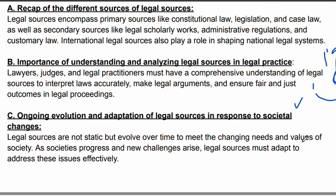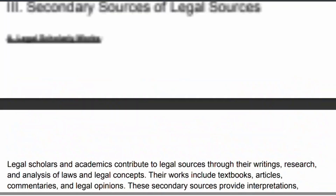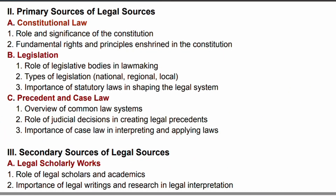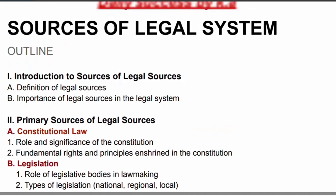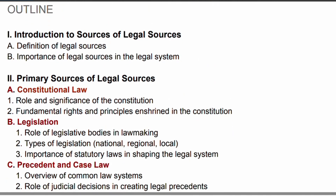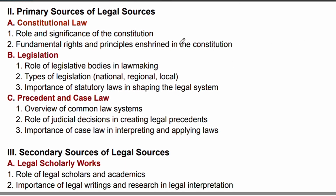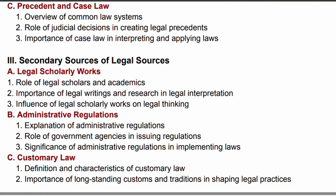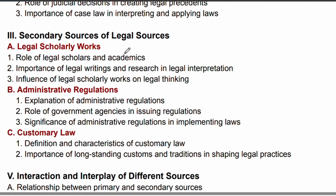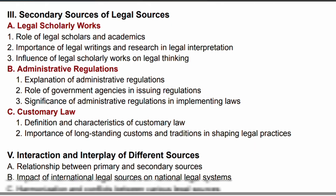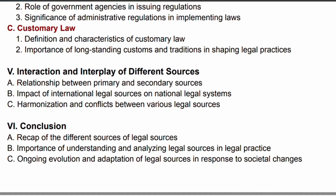This is the end of our video. Now, as a recap: legal sources are of two types — primary and secondary. Primary sources include the constitution, legislation, and precedence. Secondary sources include scholarly works, administrative regulations, and customary law. These two are interlinked, with one providing the foundation and the other the interpretation.